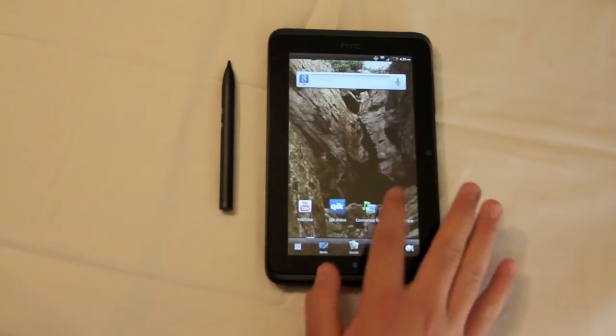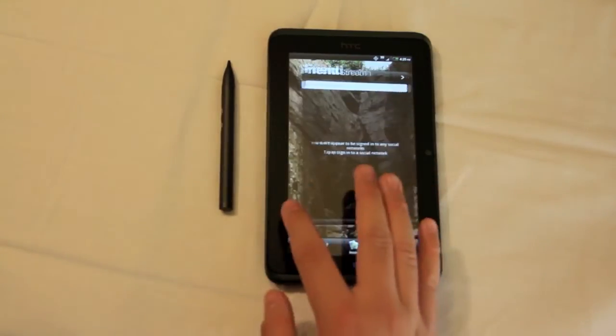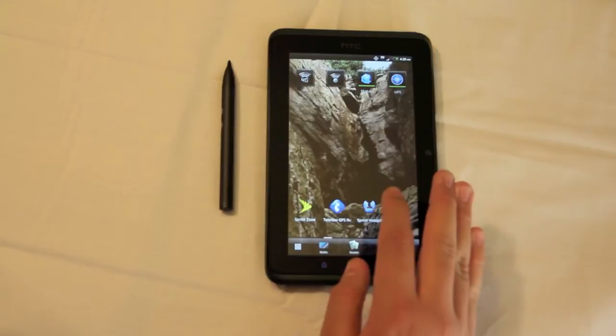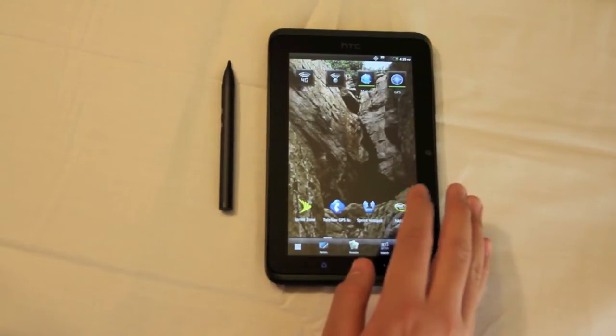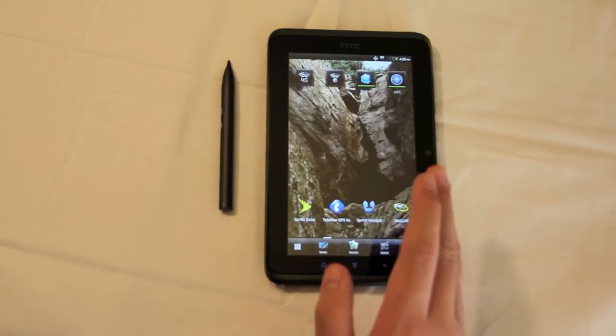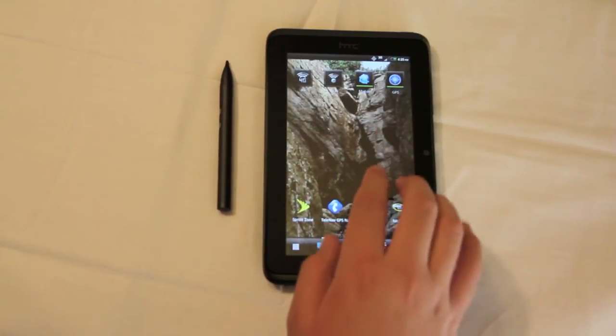But on top of that, it has Gingerbread installed, and it will be upgraded to Honeycomb, which is the tablet version of Android. This is a Sprint version of the tablet, and it has 4G support, as well as 3G.